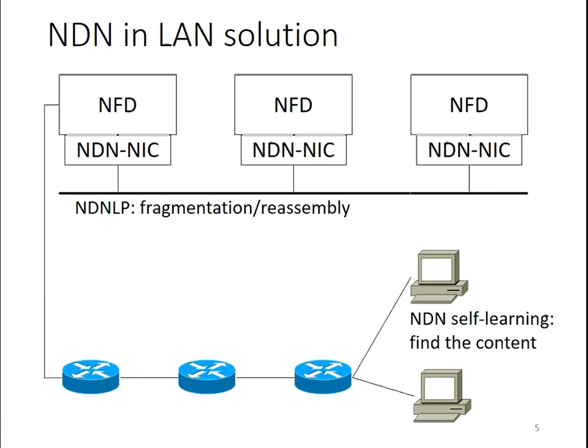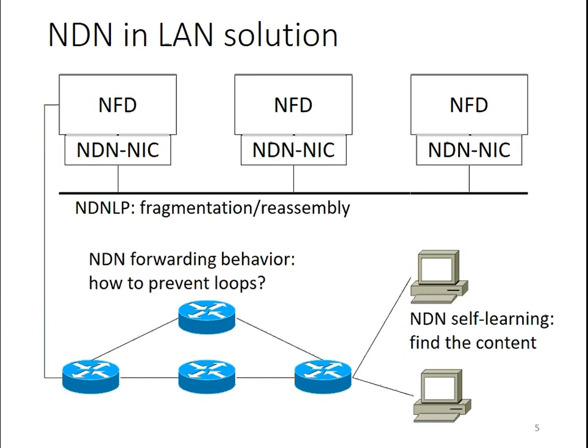So we propose NDN self-learning, which is a strategy to find content with no routing, using occasional flooding. Finally, many network topologies contain circles. If we flood some packets, they may loop around the circles. To prevent that, we define NDN forwarding behavior, which covers multiple topics including how to prevent packet loops.